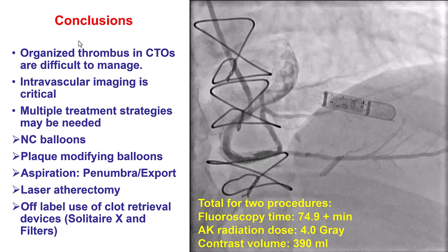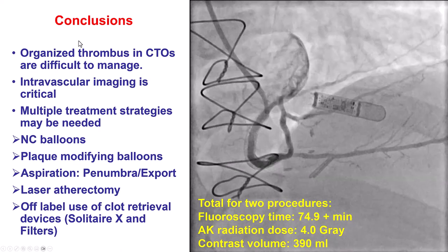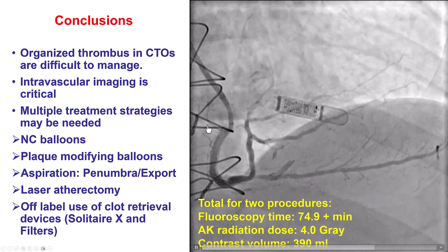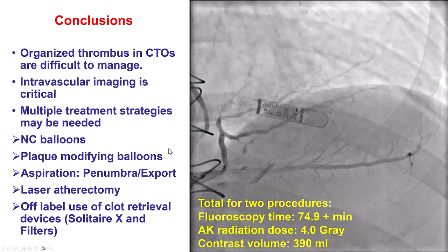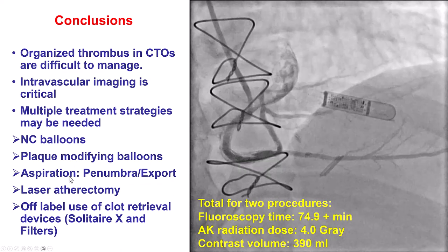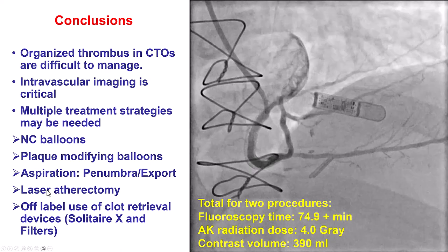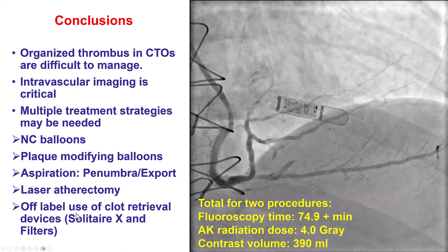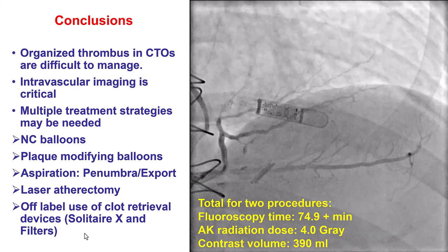The lessons from this case: First, what is sometimes called a CTO might be a more acute occlusion — here the stent had likely thrombosed not long before intervention, possibly contributed to by brachytherapy, which prevents vessel healing. Intravascular imaging is very important for detecting thrombus. We tried balloon angioplasty, plaque modification balloons, multiple Penumbra aspirations, medications including eptifibatide, a 48-hour heparin marination, laser, and finally the Solitaire X, which had the most impact on reducing thrombus burden. The patient did well and had an uneventful recovery. Thank you.